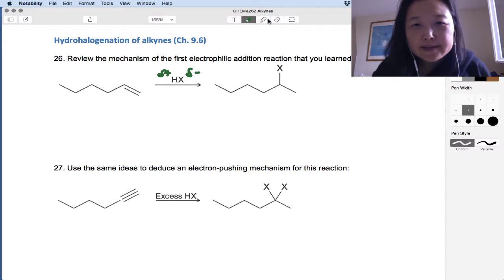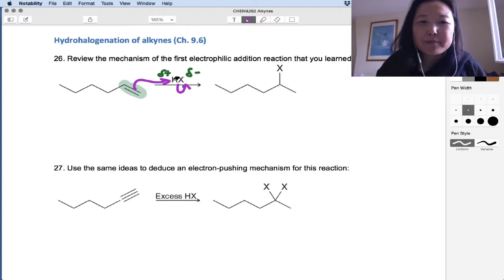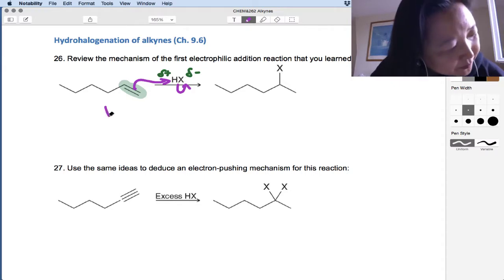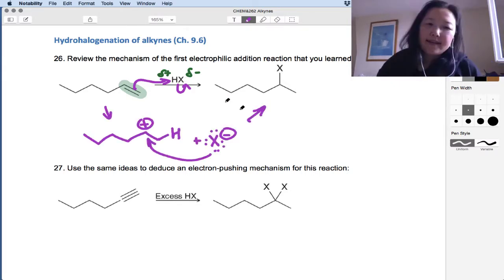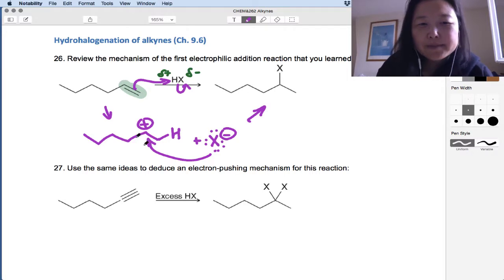And our double bond, our pi bond, is thought of as our nucleophile. So that's what starts this whole thing off. We're going to use our nucleophile and attack the hydrogen and break the bond between HX and deposit the electrons on X. And so we end up with this kind of mechanism here. And I think you know that we put the hydrogen on the less substituted carbon so that the carbocation can occur on the more substituted carbon. It's more stable to have a secondary carbocation than a primary.